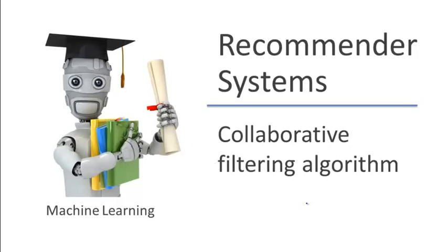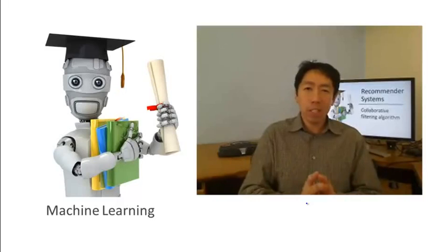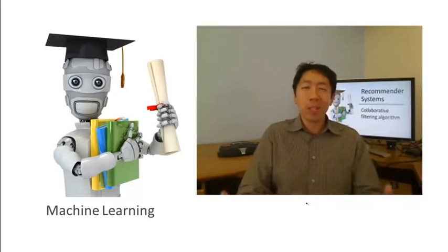In the last couple of videos, we talked about the ideas of how first, if you're given features for movies, you can use that to learn parameters for users. And second, if you're given parameters for the users, you can use that to learn features for the movies. In this video, we're going to take those ideas and put them together to come up with a collaborative filtering algorithm.